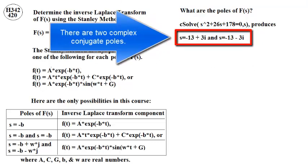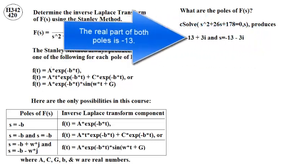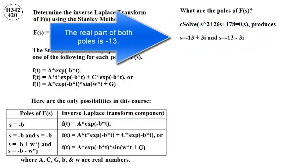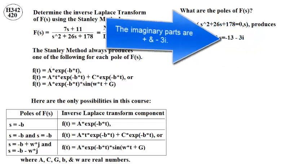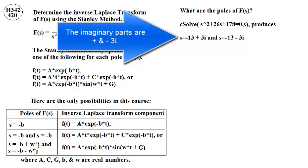S is negative 13 plus 3i, and S is negative 13 minus 3i. The real part of both poles is negative 13. The imaginary parts of both poles are plus and minus 3i.